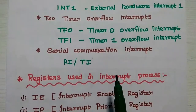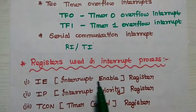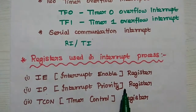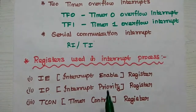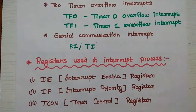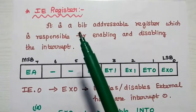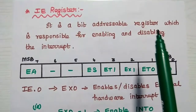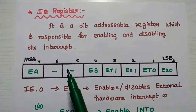There are three registers involved in this interrupt process: the interrupt enable register, the interrupt priority register, and the timer control register. These three registers are used in the interrupt process in AT51. The interrupt enable register, that is the IE register, is a bit addressable register which is responsible for enabling and disabling the interrupt.